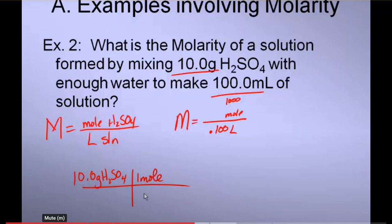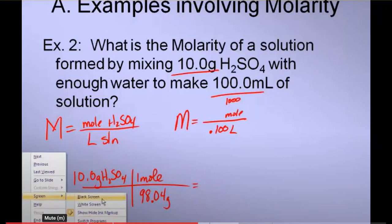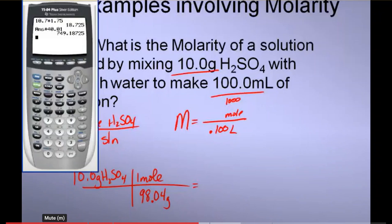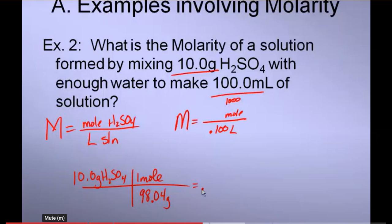Gram to mole conversion. One mole goes on the top. 98.04 grams is the weight of H2SO4. Goes on the bottom. Quick do my calculation. Clear out my previous one. 10 divided by 98.04 is 0.102. Which will go on the top over here.